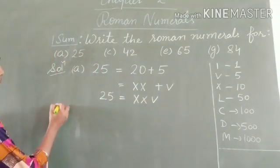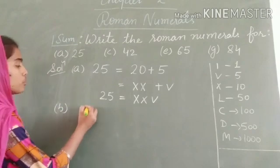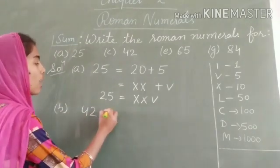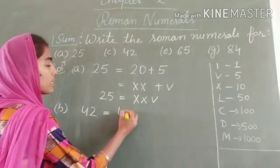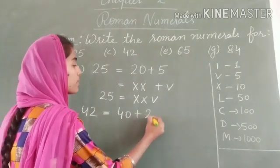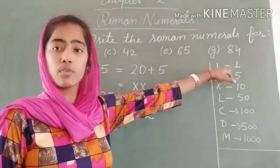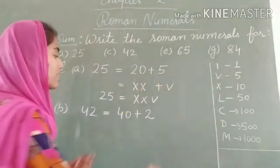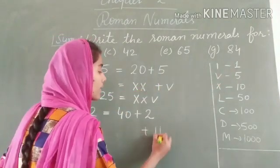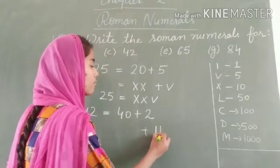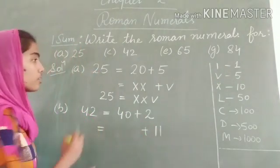Now let's shift to part B. Part B is 42. On the same basis, 42 can be written as 40 + 2. For 2, I stands for 1, so for 2 I can write I and I. That's II for 2. Now for 40,